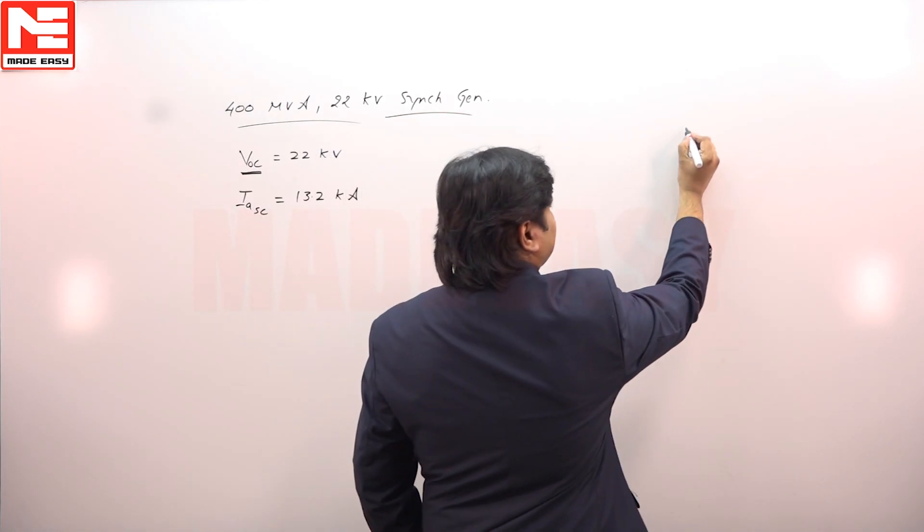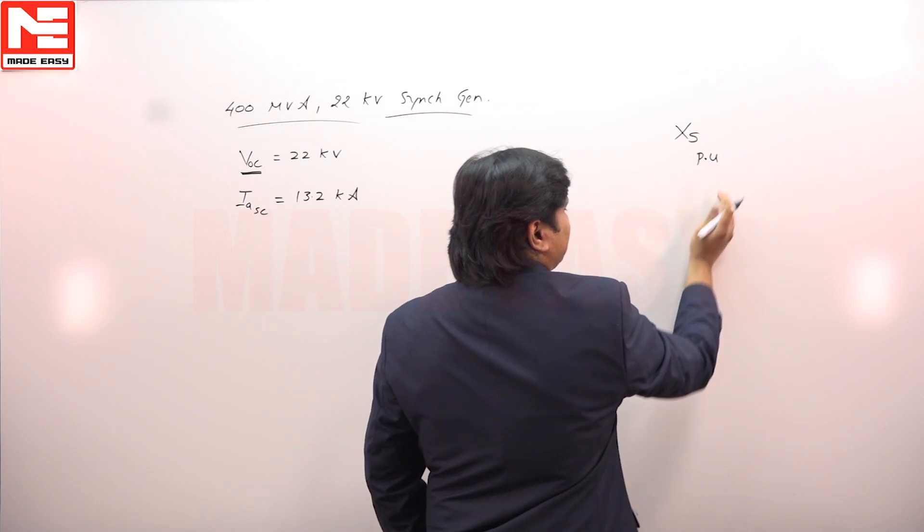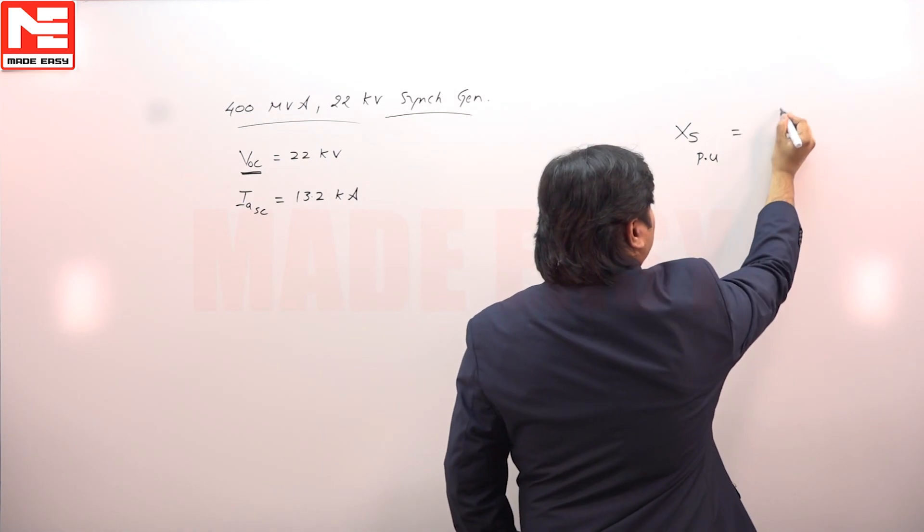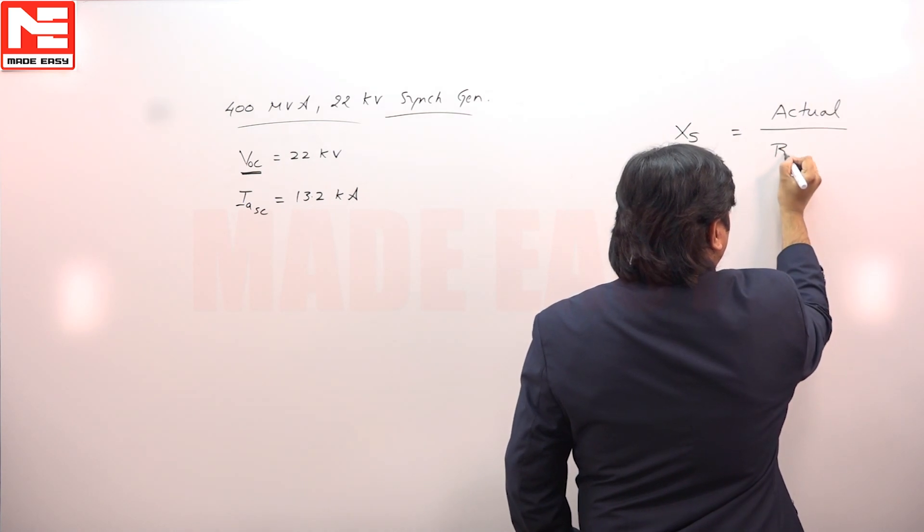It was asked excess per unit, means you have to calculate actual value divided by base value.